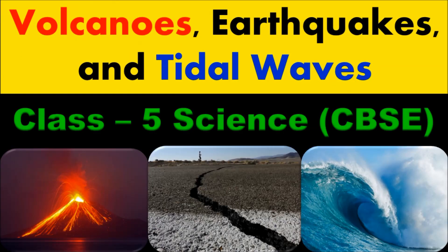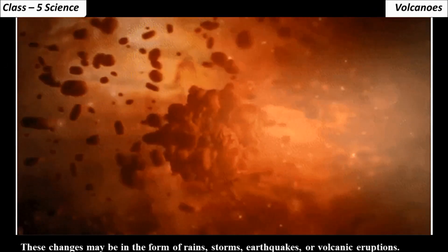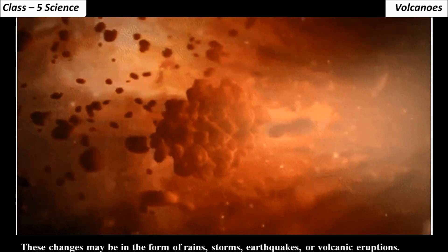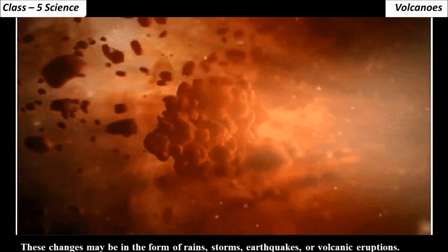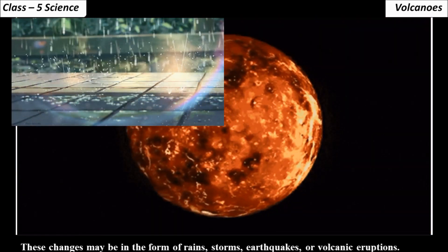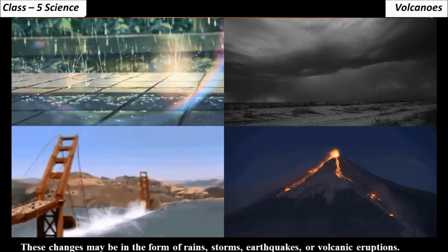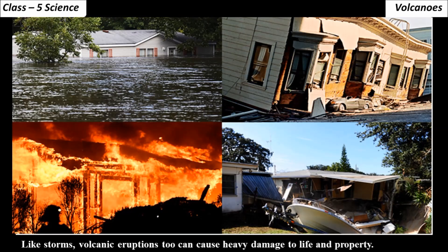Volcanoes, earthquakes and tidal waves — Class 5 Science. Many changes occur in nature from time to time. These changes may be in the form of rains, storms, earthquakes or volcanic eruptions. Like storms, volcanic eruptions too can cause heavy damage to life and property.